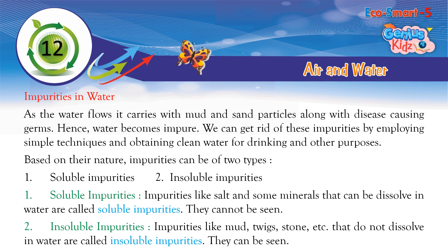Impurities in Water: As water flows, it carries mud and sand particles along with disease-causing germs, and hence water becomes impure. We can get rid of these impurities by employing simple techniques to obtain clean water for drinking and other purposes. Based on their nature, impurities can be of two types: soluble impurities — like salt and some minerals that can be dissolved in water and cannot be seen; and insoluble impurities — like mud, twigs, stone, etc., that do not dissolve in water and can be seen.